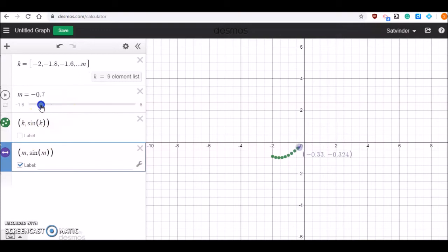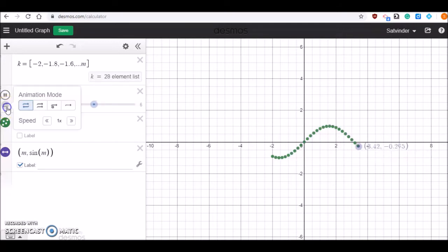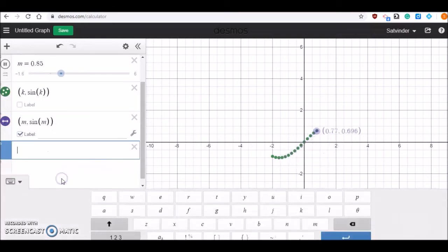Let me play the slider. So now you can see as the point is moving on. You can change the animation speed, for example here, and only in one direction. That's pretty cool.